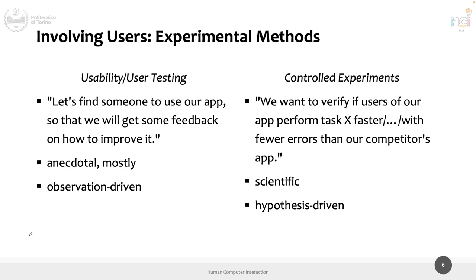There is another method in the family of user studies - not expert - that we won't cover in this course, called controlled experiments. They are scientific, driven by a hypothesis, and compare conditions. The difference: usability testing says 'let's find someone to use our app so we can get feedback.' A controlled experiment says 'we want to verify if users of our app perform a given task faster, more accurately, or with fewer errors than another application or version.' It's scientific - you have a hypothesis.